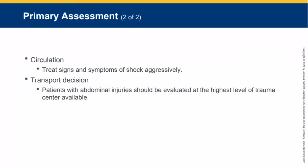Once ABCs are taken care of, treat signs and symptoms of shock aggressively — control any bleeding, give oxygen, place the patient supine, and keep them warm. The key indicators of shock are cool, pale, cool and clammy skin. By the time you finish your ABCs in your primary assessment, you should be deciding if this patient is a load-and-go or stay-and-play. If there is any impact to level of consciousness or ABCs, that's a high priority patient who should be moved from the scene within 10 minutes.